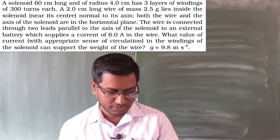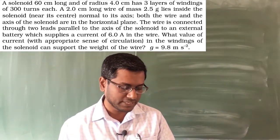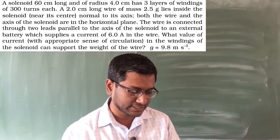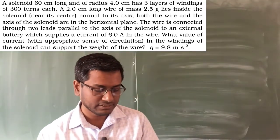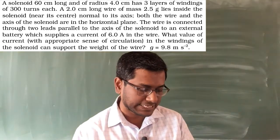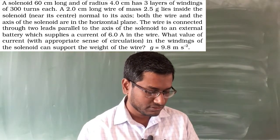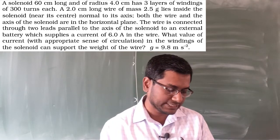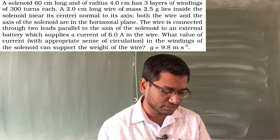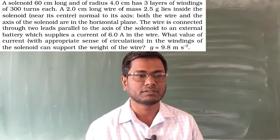A solenoid 60 cm long and radius 4 cm has 3 layers of winding of 300 turns each. A 2 cm long wire of mass 2.5 grams lies inside the solenoid near its center, normal to its axis. Both the wire and the axis of the solenoid are in the horizontal plane. The wire is connected through two leads parallel to the axis to an external battery supplying a current of 6 ampere. What value of current with appropriate sense of circulation in the solenoid windings can support the weight of the wire? G is given as 9.8 m/s².